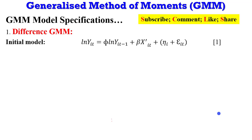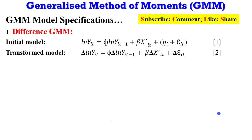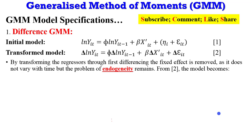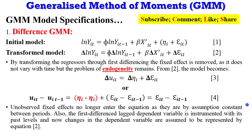System GMM minimizes data loss compared to difference GMM. Looking at GMM model specifications under difference GMM: on screen is the initial model followed by the transformed model. By transforming the regressors through first differencing, the fixed effect is removed as it does not vary with time, but the problem of endogeneity still remains. The first-difference lagged dependent variable is instrumented with its past levels, and changes in the dependent variable are represented by the transformed equation, which still shows endogeneity due to the lagged dependent variable being correlated with the error term — specifically, correlation between y_{t-1} and e_{t-1}.